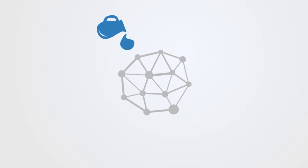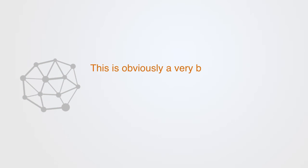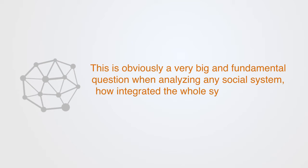Put very simply, of central interest here is how something flows through the whole social network, as it is this flow that gives it cohesion. This is obviously a very big and fundamental question when analyzing any social system. How integrated the whole system will be is determined by many different factors.